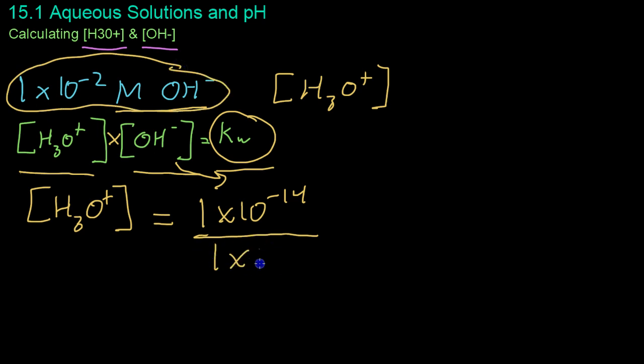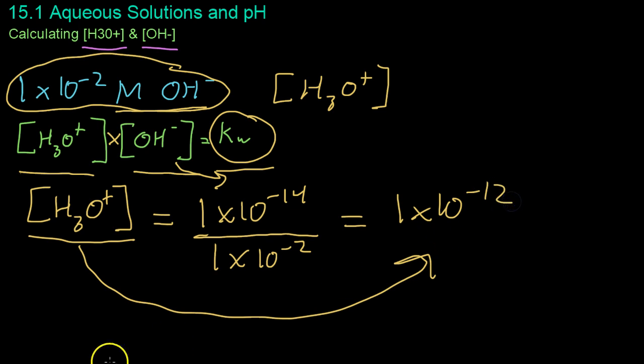We solved for our molarity content of hydroxide, 1 times 10 to the negative 2. We get that the concentration of hydronium is 1 times 10 to the negative 12. Just as we use the molar concentration of hydroxide to solve for hydronium, the reverse is true as well. We could start with a calculation for hydronium and then use the ionization constant to solve for hydroxide.